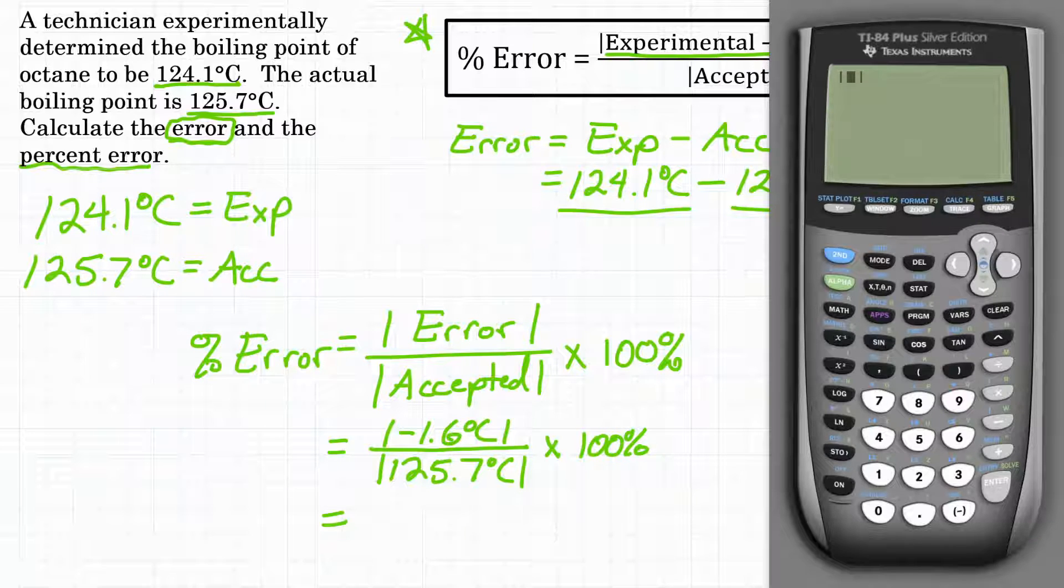Now, if you don't know where that button's at, or you just have a regular basic calculator, again, absolute value just means take the positive. So I'm going to put negative 1.6 here, because I have absolute value bars. If you don't just put positive 1.6, because that's what my calculator is going to do here is just take the positive.